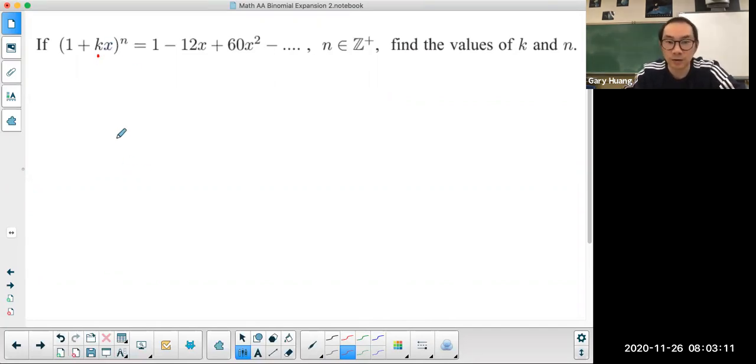This is one of the harder questions in binomial expansion. You have to understand that when you expand, what's happening with each of those first three terms that's given.